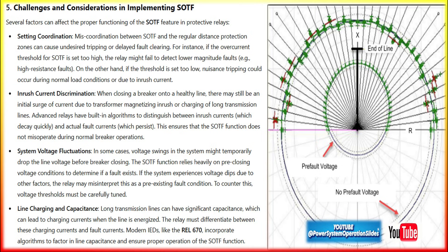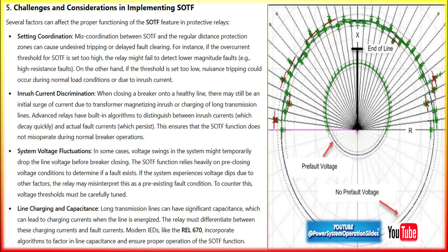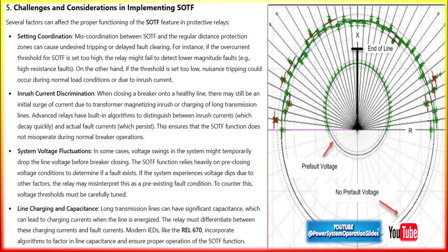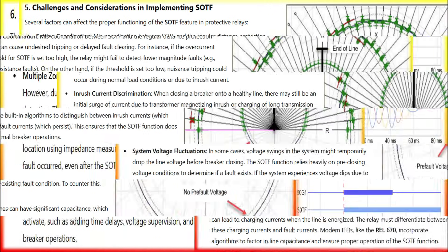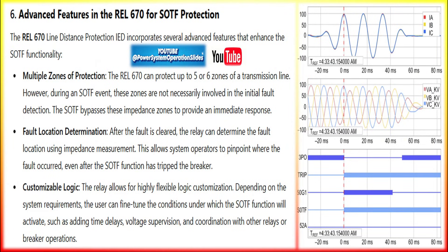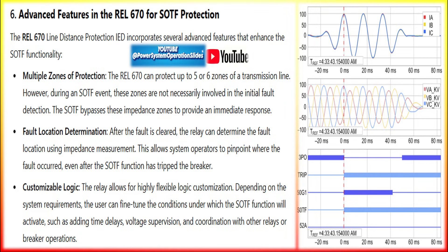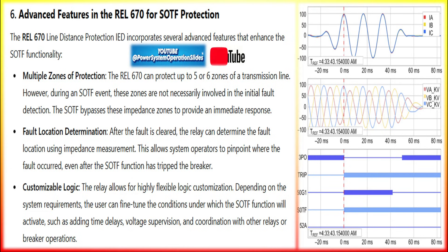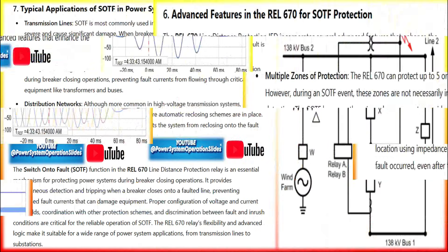To delve deeper into the SOTF function and its relevance to distance protection, let's examine more intricate technical aspects, focusing on operational challenges, relay configuration, and coordination with other protection schemes. When a fault exists on a transmission line but the breaker is open, the relay's normal distance protection using impedance measurement may not detect this fault until current flows through the line. Upon closing the breaker — pre-fault condition — when the breaker is open, there's typically little to no voltage across the open breaker terminals, as the fault effectively shorts the line. This low voltage condition is detected by the relay.